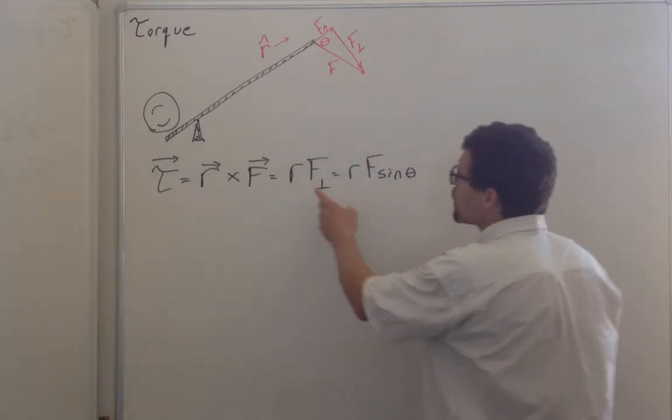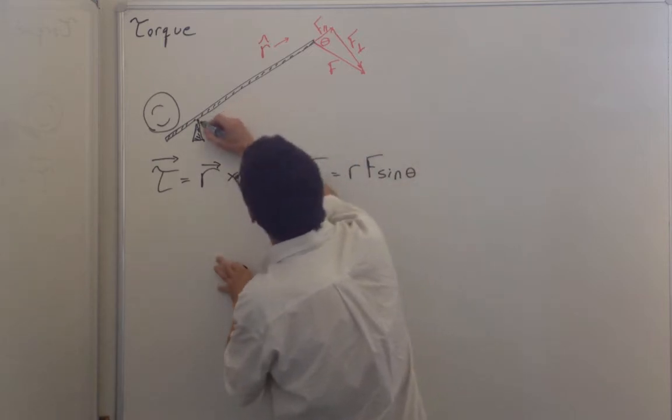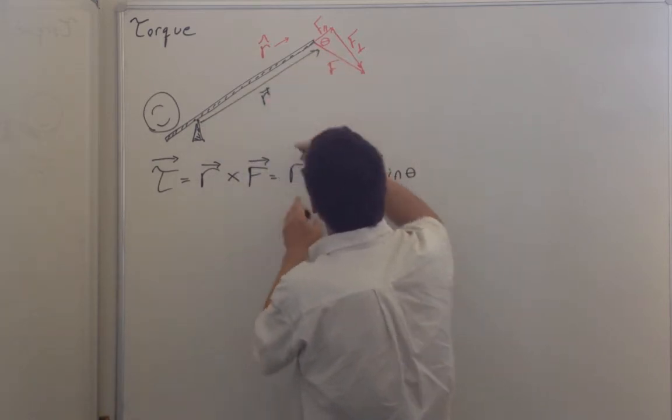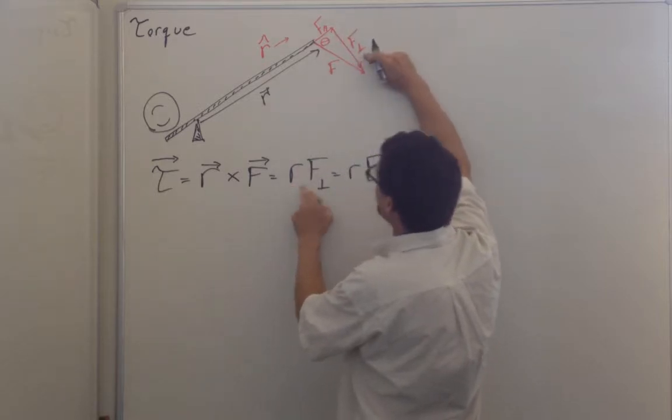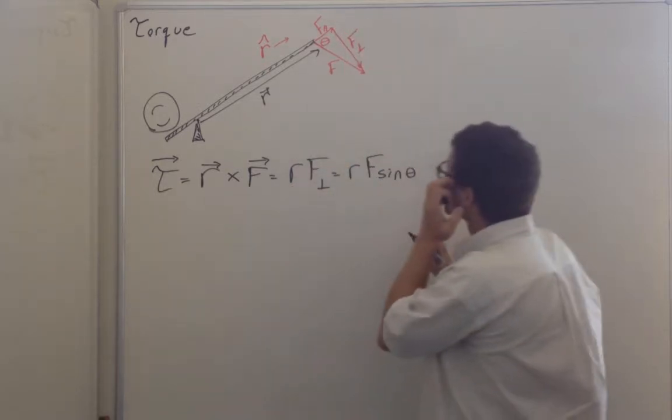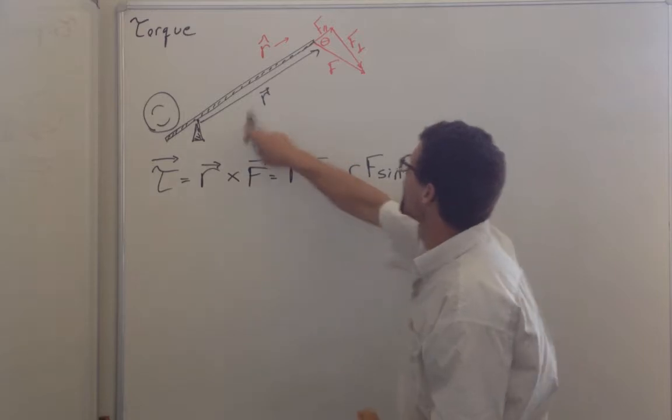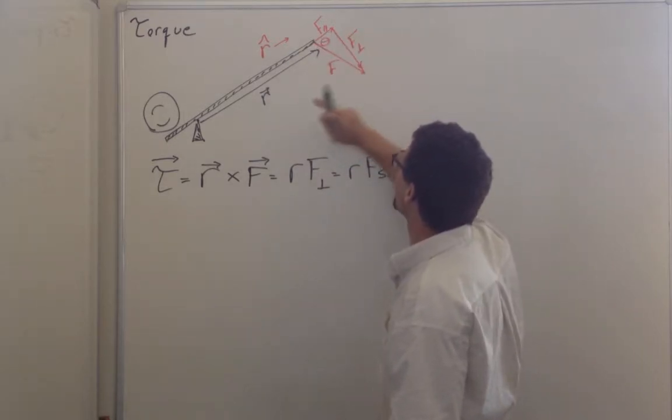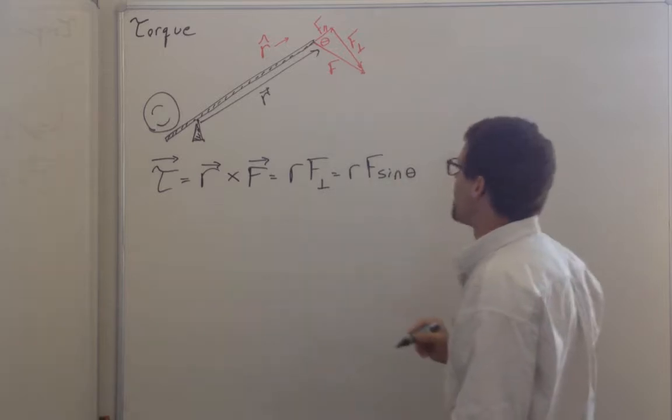And so we can go backwards and say, it's the radius, here's the radial vector. Radius times the perpendicular component of the force, which is r times f times sine theta, because sine theta is opposite over hypotenuse.